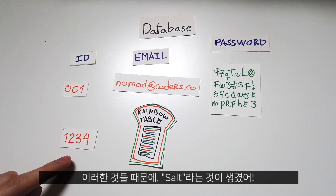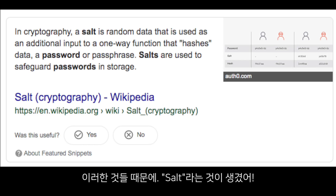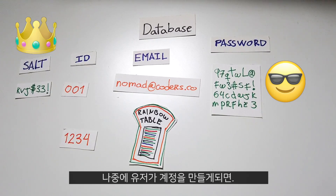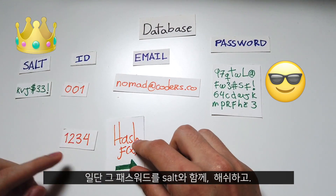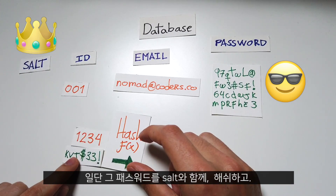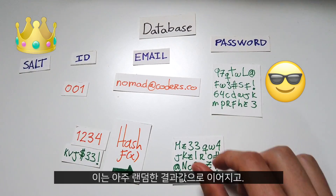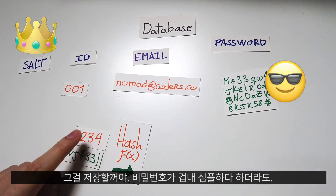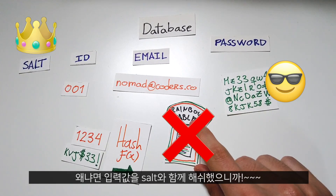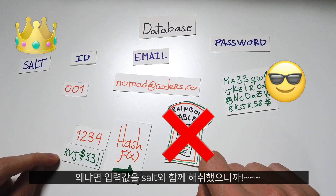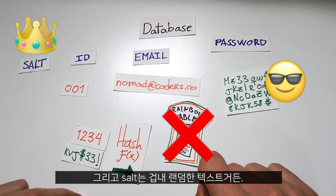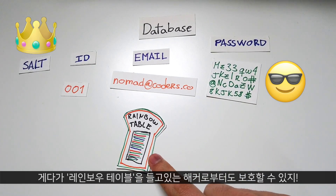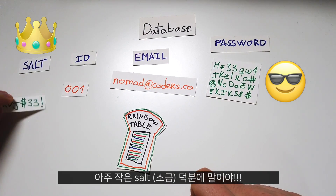So to make it even harder for people to hack you, we introduce something called salt. Salt is a really, really tiny, random piece of text. Next time the user is creating an account, we are going to hash their password together with a little bit of salt. That is going to produce another random output, and we save that output. Even if the password is very easy, this hash is not going to be on the rainbow table because we hashed the input with a little bit of salt — which is a really random piece of text. This is how you protect your users against someone reading their password or finding the hash on a rainbow table.